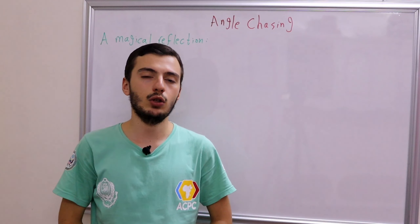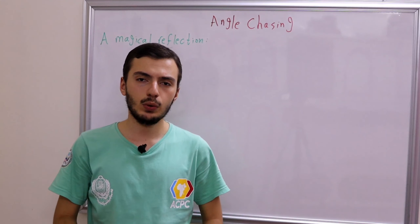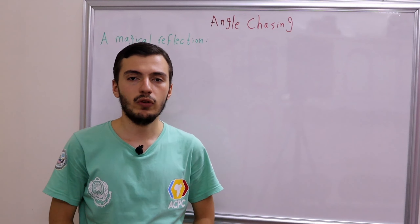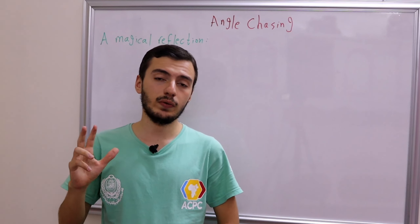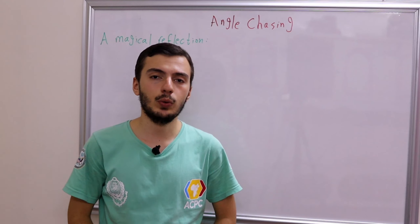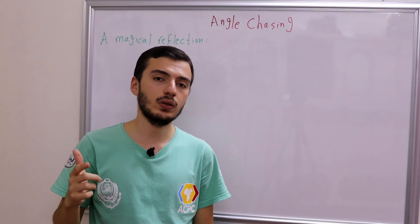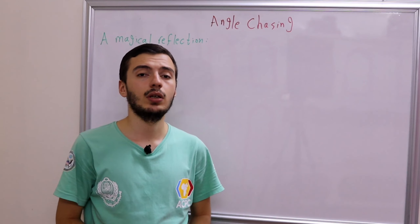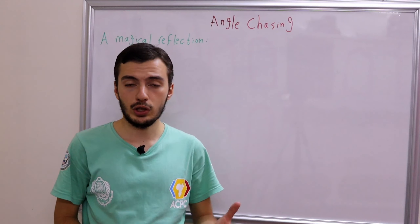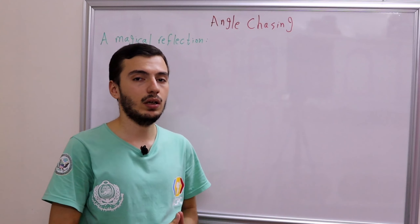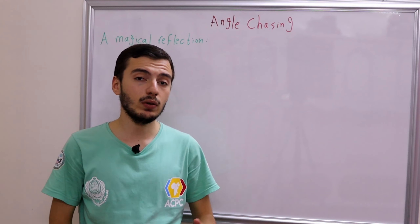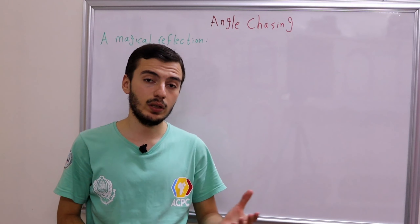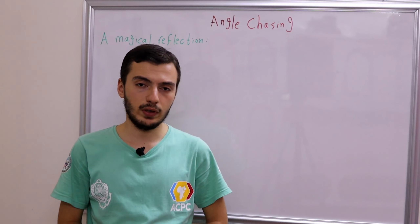Hi everyone and welcome to my YouTube channel. We're continuing our geometry playlist. In our first three videos we basically discussed the three centers of a triangle: the orthocenter, the incenter, and the circumcenter. We made a video for each center of triangle and discussed the angle tracing — basically the angles related to each center of the triangle.